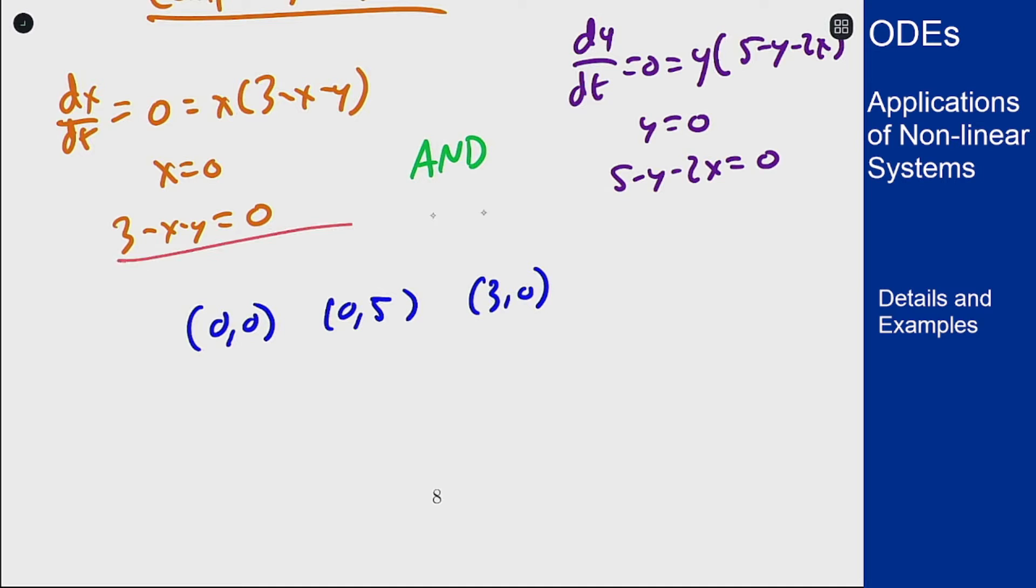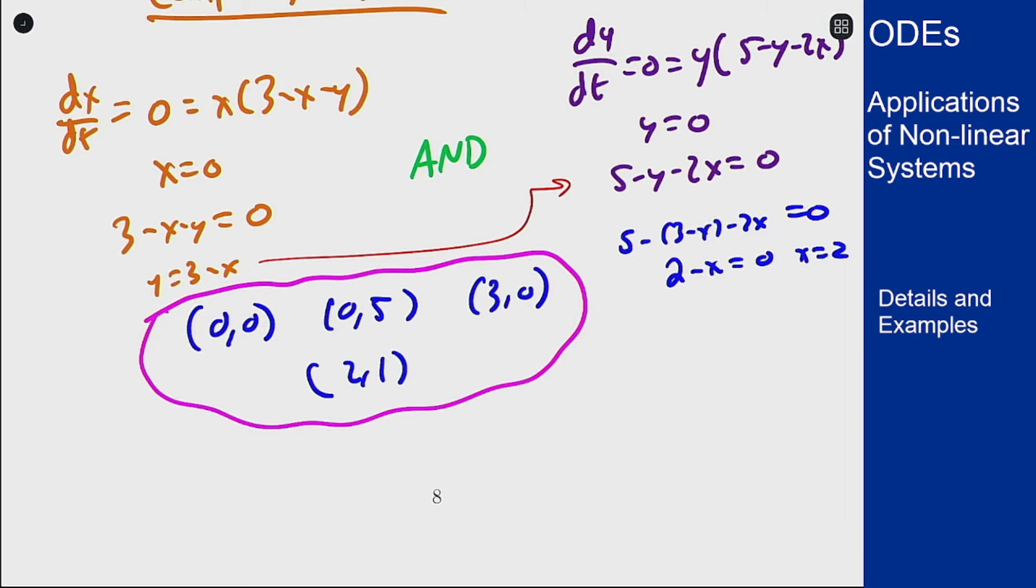And then we have these two equations here which this one here tells me that y equals 3 minus x. I can plug that in over here to get 5 minus 3 minus x minus 2x equals 0. This is 2 minus x equals 0 or x equals 2 and so y is 1. These are our four equilibrium solutions that we have for this problem.